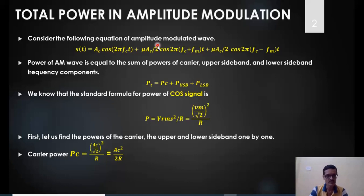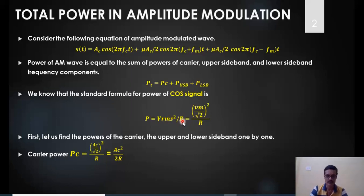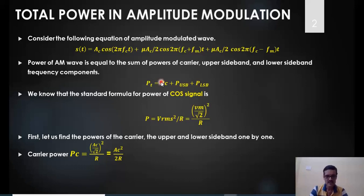As noted, these are peak amplitudes, so we represent power in the form of RMS values. The simple formula to calculate power is V²/R. The relationship between RMS voltage and peak voltage is: Vrms = Vm/√2, or equivalently (Vm/√2)² / R. We will use this standard formula for PC, PUSB, and PLSB.